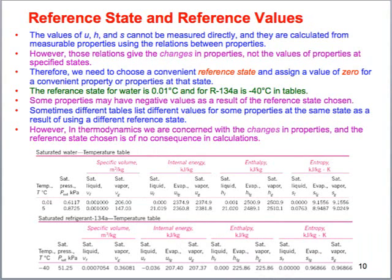Let's finish chapter 4. What I'd like to talk about right now is reference states and reference values. All these properties that we're dealing with are taken at a reference state. The reference state has to be given a value of 0 somewhere because we can calculate what these values are, and knowing where they are equal to 0 in certain locations is important.